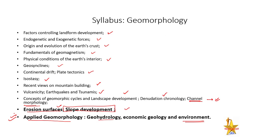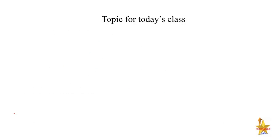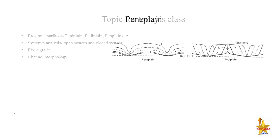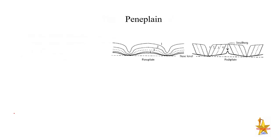Today's topic is Erosional Surface, and along with that we are going to discuss Channel Morphology and River Grade — three things in total. The erosional surface is of several types, like Peneplain, Panplane, Padiplain, or Glacial Erosion. Some people have already studied these and we will discuss them on the basis of short notes.